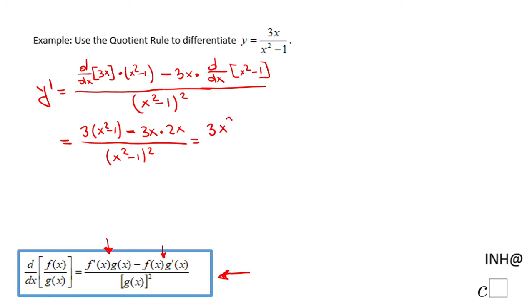First of all, distributive property: 3x squared minus 3 minus 6x squared over x squared minus 1 squared.